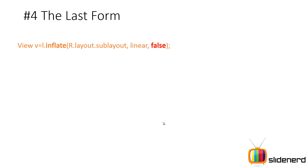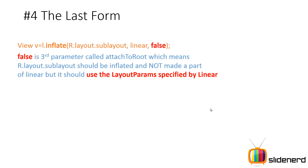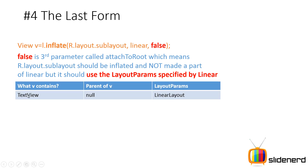This is the final form of the method: l.inflate(R.layout.sublayout, linear, false). False means R.layout.sublayout should be inflated but it should not give a reference to the LinearLayout inside V — instead it gives us the reference directly to the TextView. That addresses the first issue. The linear is passed as the second parameter so that you can use its layout params object to control the appearance of this TextView. V now contains the TextView, and the parent of V is null even though you specified linear, because with false that linear is only used to provide the layout params.